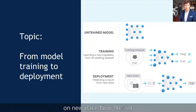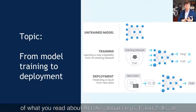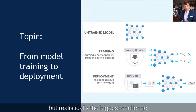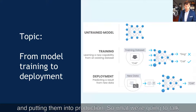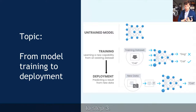Now, 90% of what you read about AI talks about steps one and two — models, performance, training, and GPUs. But realistically, the biggest challenge you're going to have is taking those trained models and putting them into production. So what we're going to talk about today is the challenge of going from step two to step three.